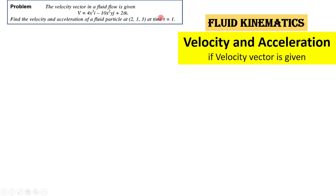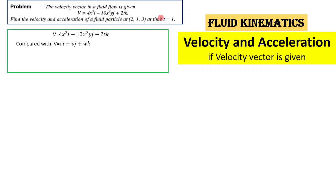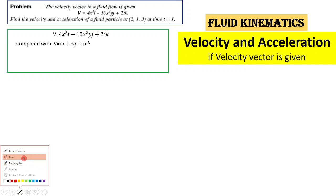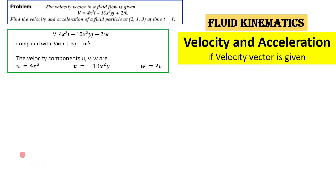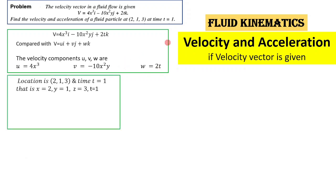At time t = 1 second. We compare this equation with the standard form ui plus vj plus wk, so we get u = 4x cubed, v = minus 10x squared y, and w = 2t. The location is given as (2, 1, 3) and time is 1, so x = 2, y = 1, z = 3, and t = 1.